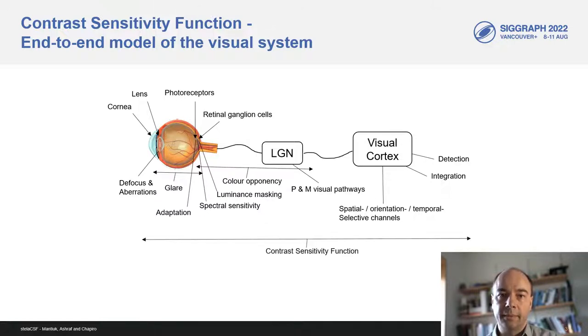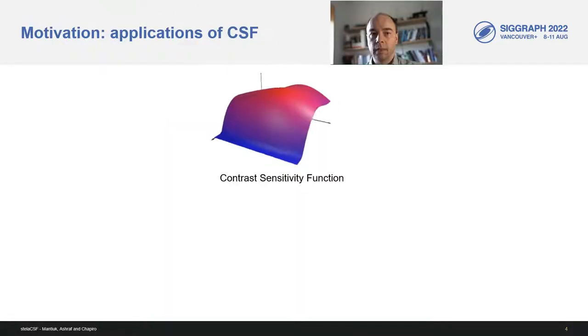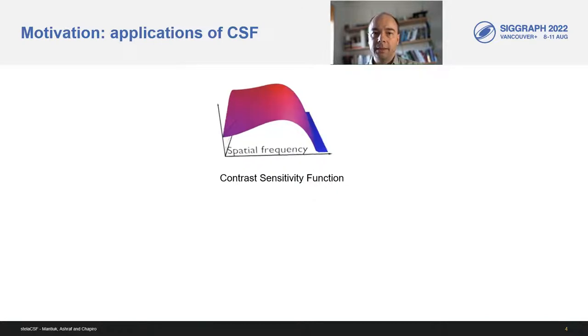Contrast sensitivity function or CSF is a shortcut. It's an end-to-end model which attempts to characterize the response of the visual system for a given input without trying to model each individual mechanism. And for that reason, CSF is very practical. It directly tells us what will and what will not be visible. So why should we care about the CSF? The CSF is a building block of many applications that rely on modeling the visual system.